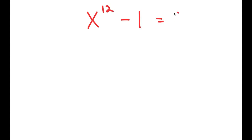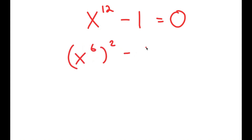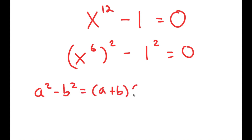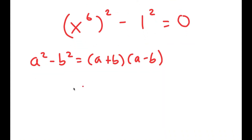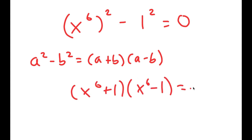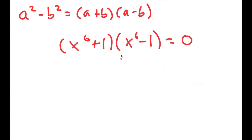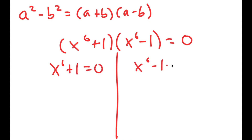In this video I'm going to solve the equation x to the power of 12 minus 1 is equal to 0. To solve this I'm going to first rewrite this as x to the power of 6 to the power of 2 minus 1 squared equals 0, so I can use the property a squared minus b squared equals a plus b times a minus b. This turns into x to the power of 6 plus 1 times x to the power of 6 minus 1 equals 0.